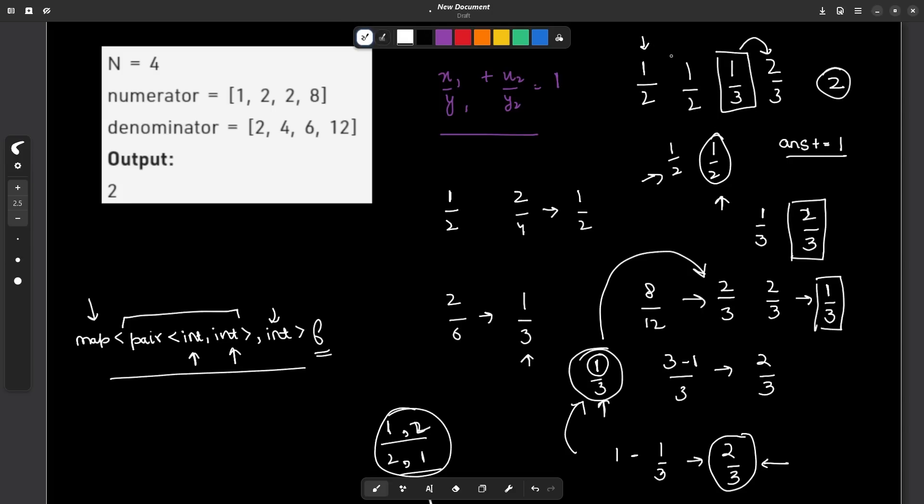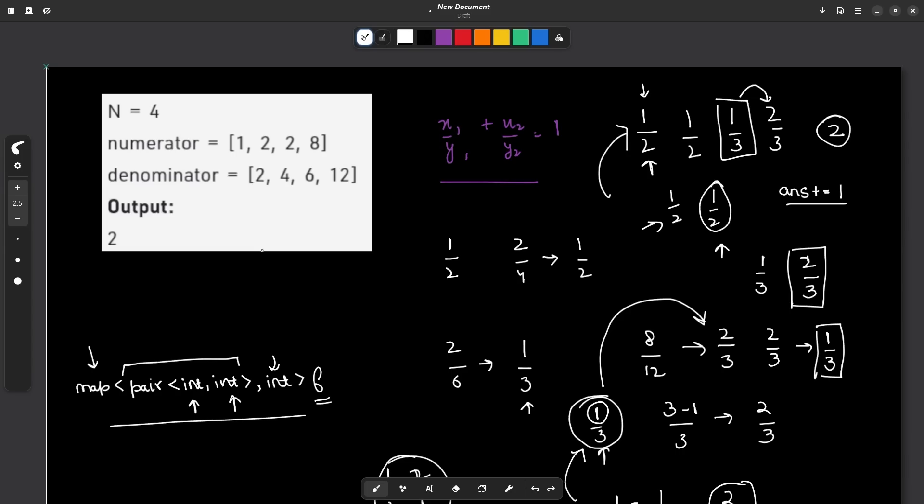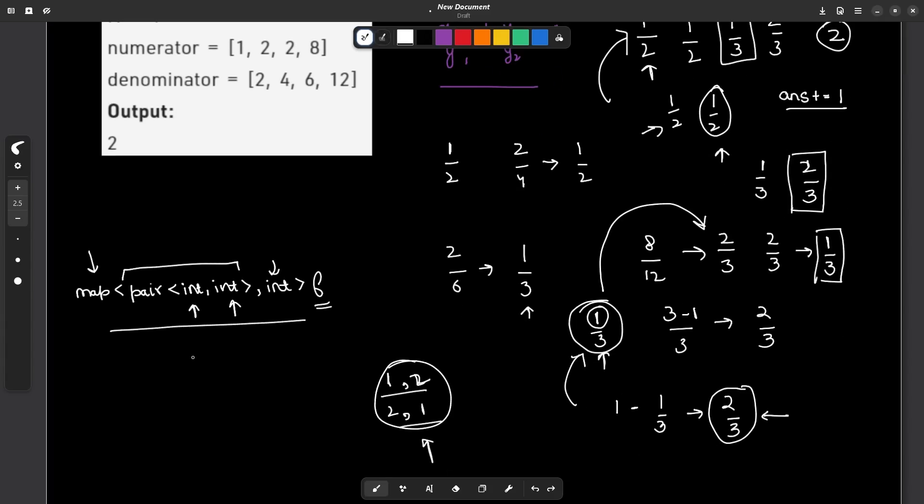This way my answer will be 2 and this way I can avoid repetitive counting of the same pairs. What you will do for each index, you will find your answer and after finding your answer for that particular index you will add that value to your frequency map. Now one last question. How do you reduce these fractions into their simplest form? For this you can make use of GCD. Because if you have two numbers A and B the divisor that is common in both of them would obviously be GCD, it will be the greatest common divisor.